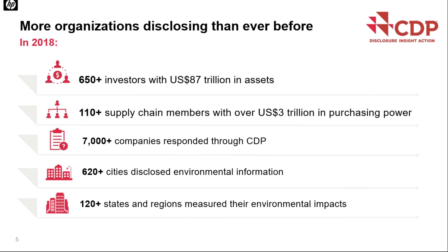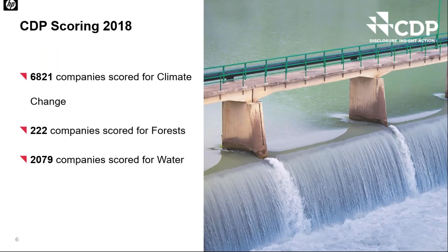CDP originally set out with only 35 investors in 2002. CDP now works with over 650 investors with some $87 trillion in assets, and over 110 supply chain members with over $3 trillion of purchasing power. In 2018, over 7,000 companies responded through CDP — an 11% increase on the prior year. For scoring in 2018, CDP produced over 9,000 individual scores, including the supply chain program.